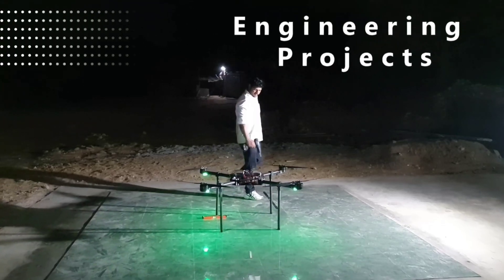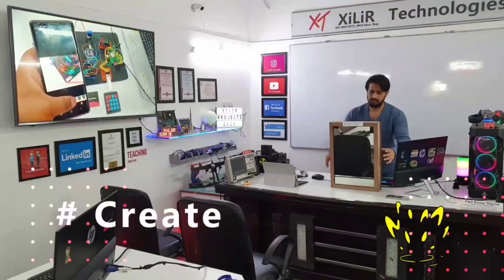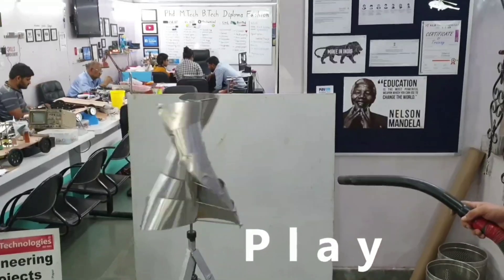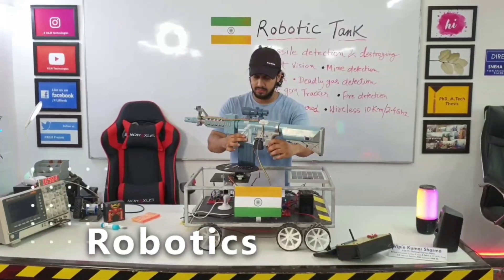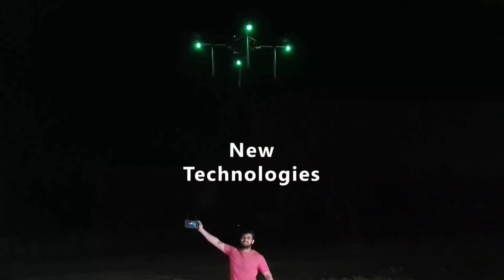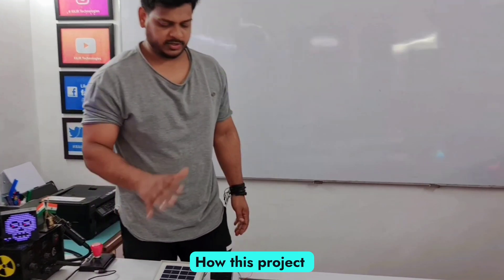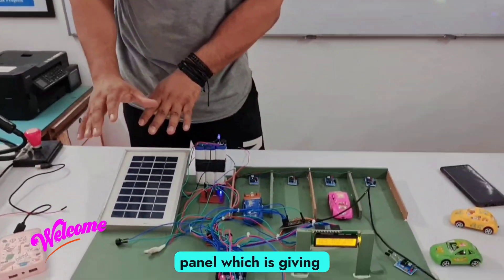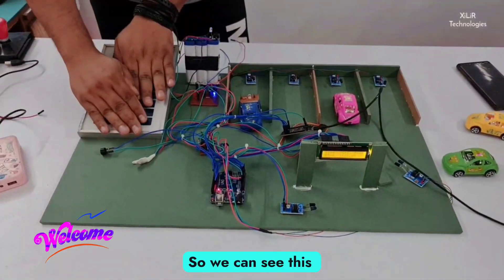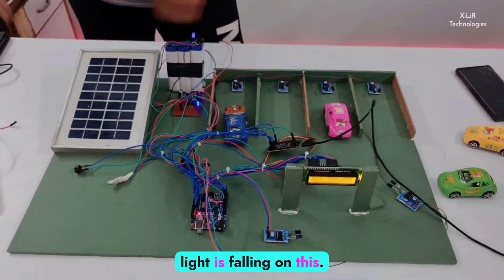Let's begin. So now we will see how this project works. This one is solar panel which is giving power supply. So we can see this LED is glowing when light is falling on this.